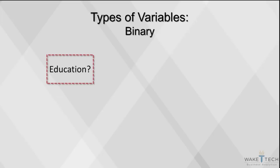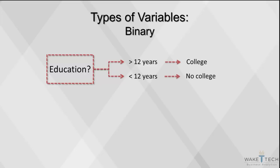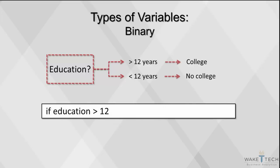We can recode into a binary yes-no variable by saying that if education is greater than 12, that implies college equals 1; otherwise, college equals 0. This type of coding is useful in descriptive and predictive analytics.